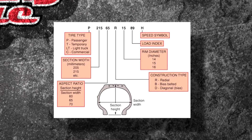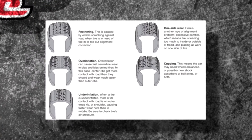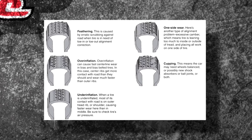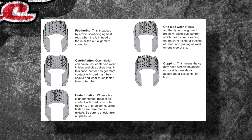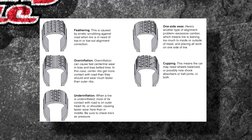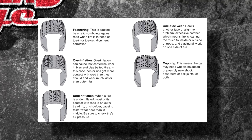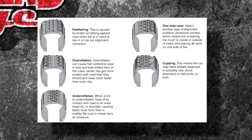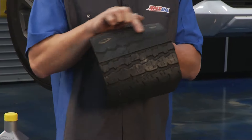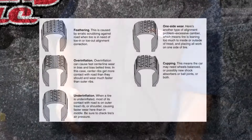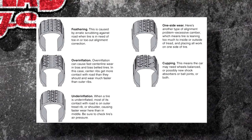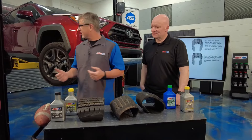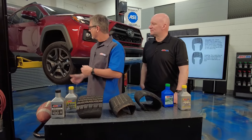There's a lot going on when we talk about tires. We need to understand wear patterns to know when to retire them. Feathering is a toe alignment issue; over-inflation causes wear in the middle; under-inflation causes wear on both sides; one-side wear is a camber alignment issue; and cupping or chunking is another pattern to watch for.